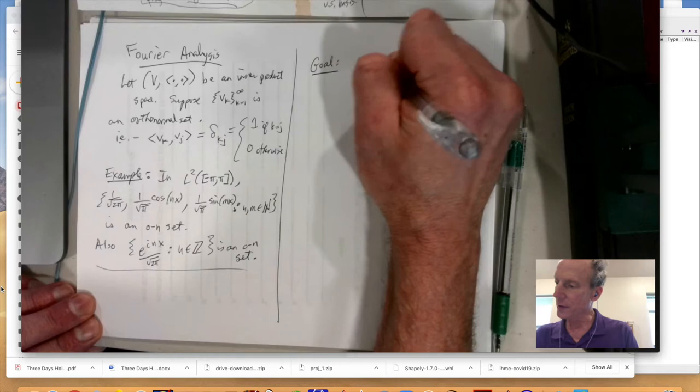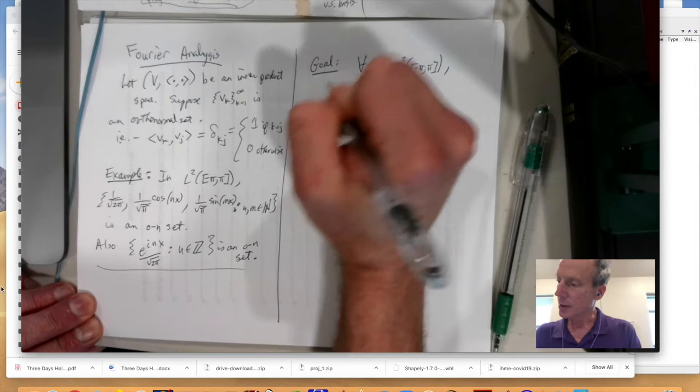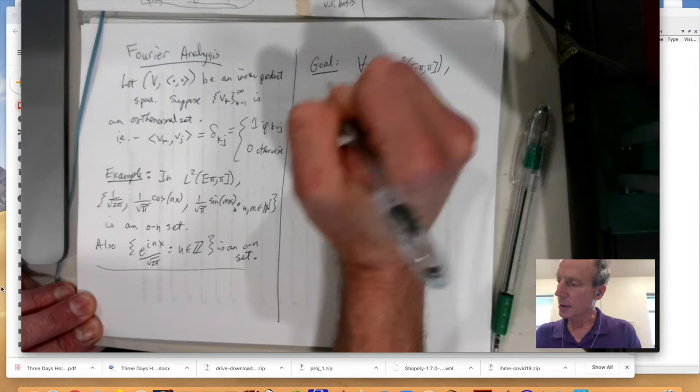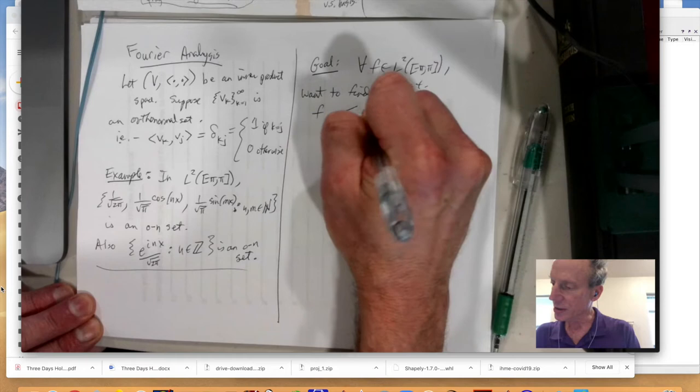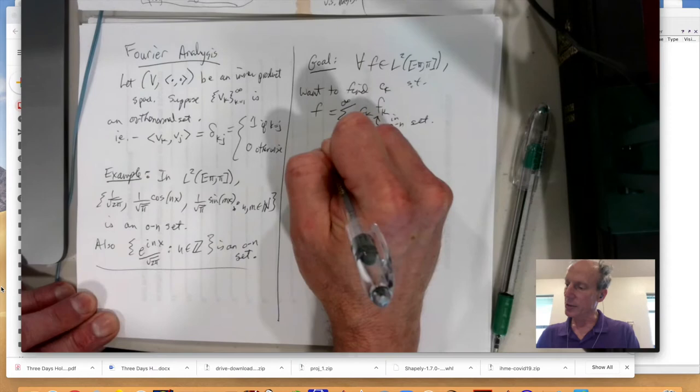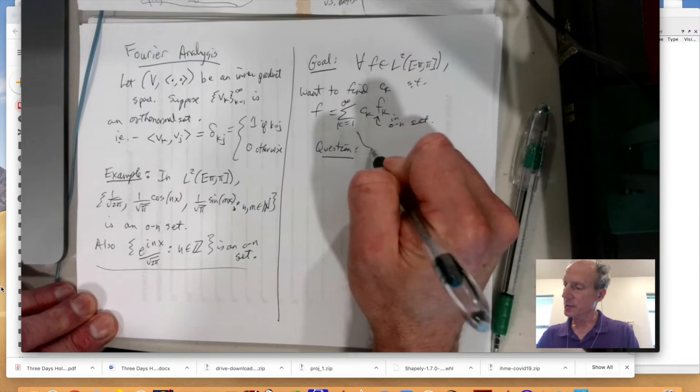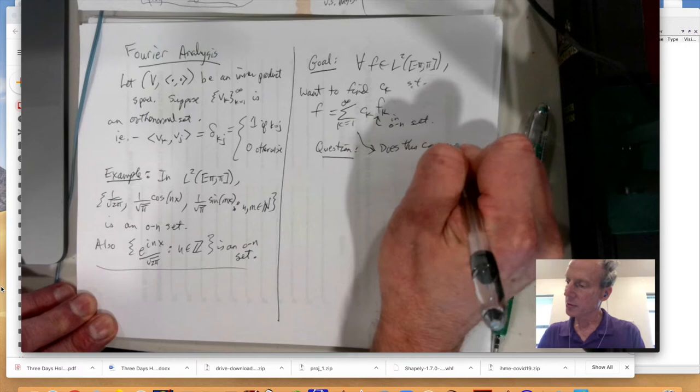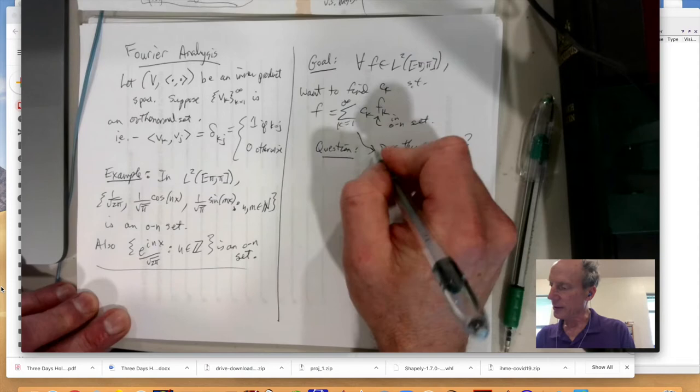But here we've got an infinite series of things. So let me just kind of tell you the goal. So the goal is, for all f in L2 of negative pi to pi, I want to find ck such that f is equal to the summation of ck fk, where this is in my orthonormal set, and k equals 1 to infinity.